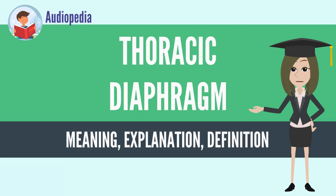The term diaphragm in anatomy can refer to other flat structures such as the urogenital diaphragm or pelvic diaphragm, but the diaphragm generally refers to the thoracic diaphragm. In humans, the diaphragm is slightly asymmetric — its right half is higher up, superior to the left half, since the large liver rests beneath the right half of the diaphragm.